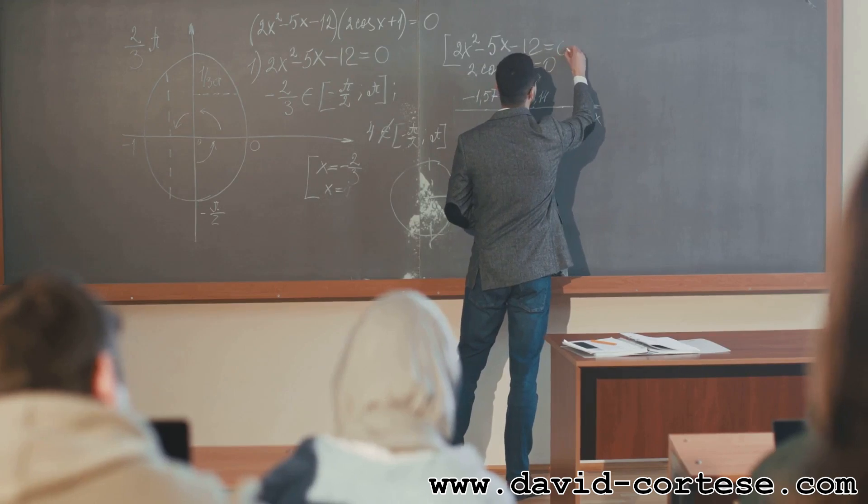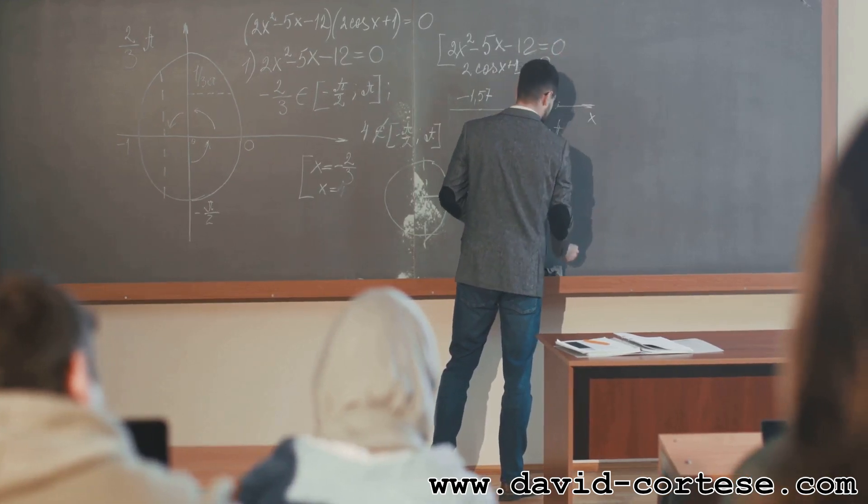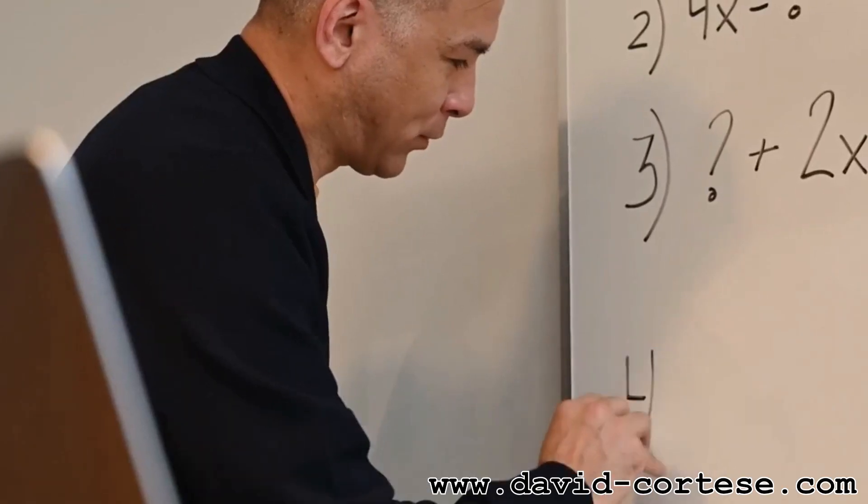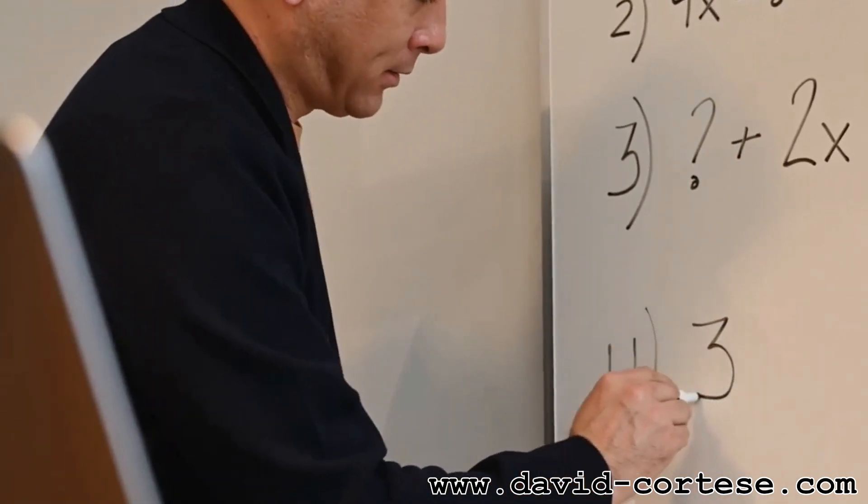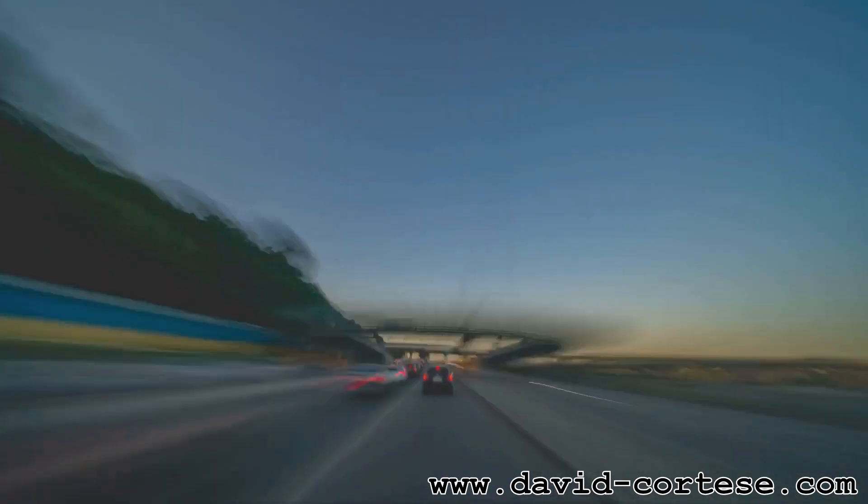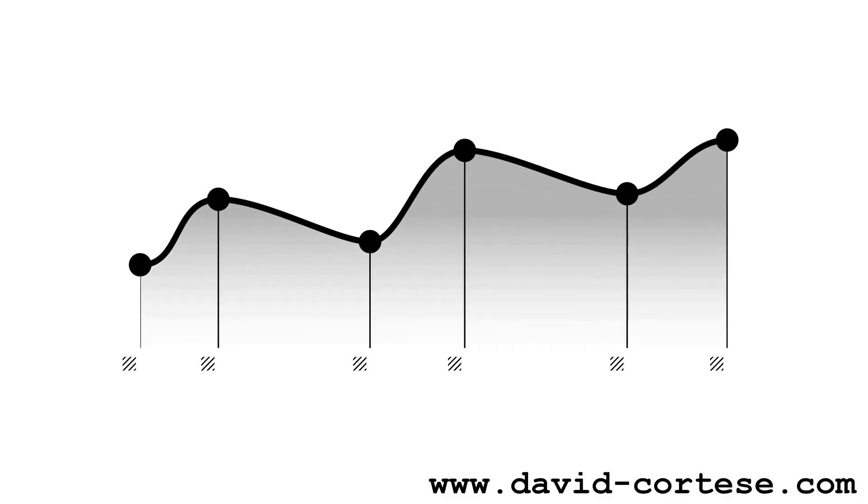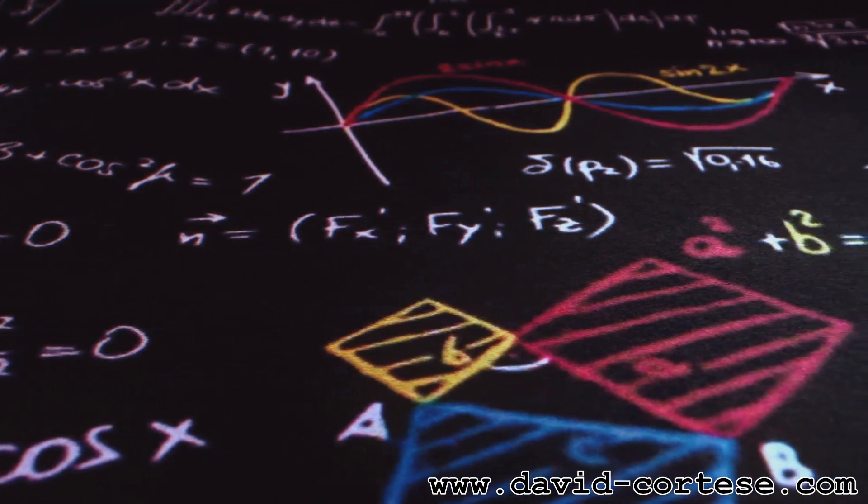Derivatives are incredibly useful for analyzing real-world situations involving change. For instance, in physics, velocity is the derivative of position, and acceleration is the derivative of velocity. This means that if we know an object's position as a function of time, we can use derivatives to find its velocity and acceleration at any given moment.